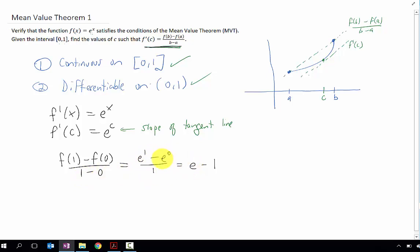E to the one is just e, and e to the zero, anything to the zero, is just one. So this is the slope of our secant line between those two x values.